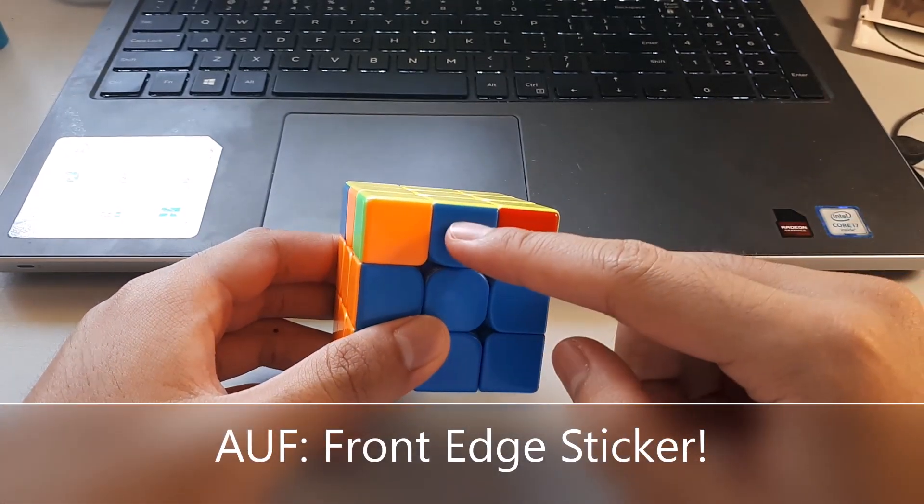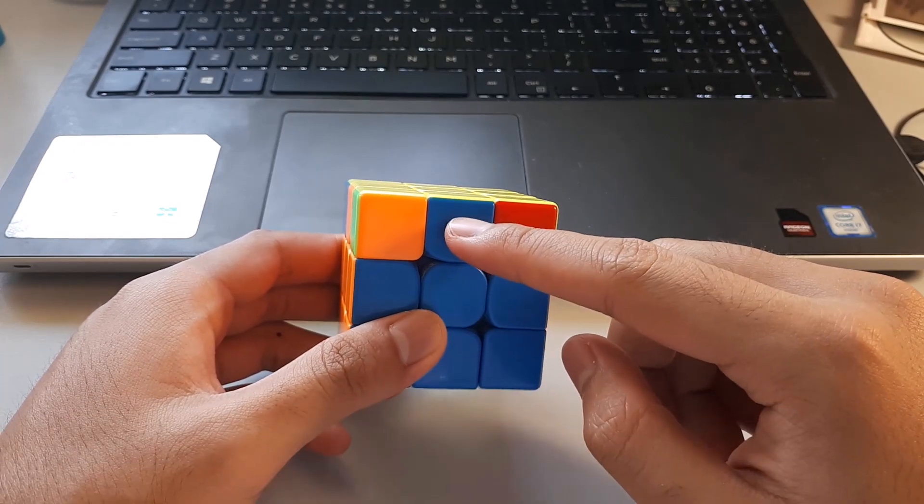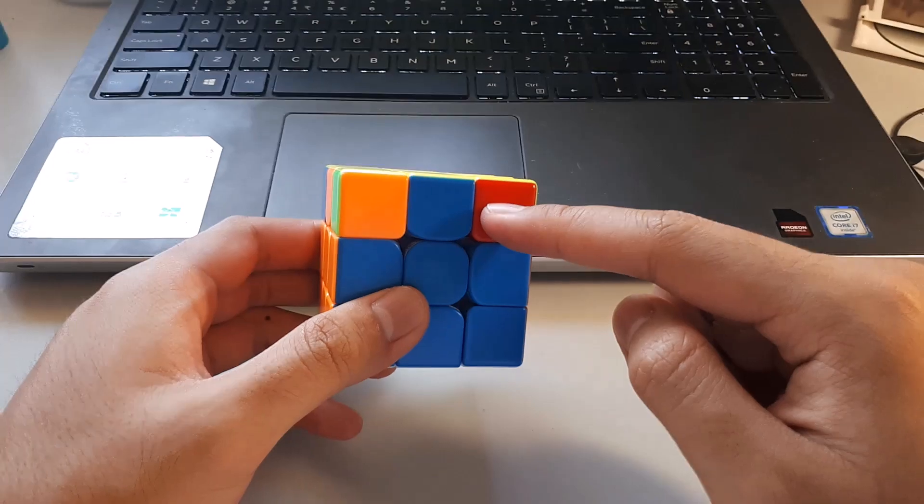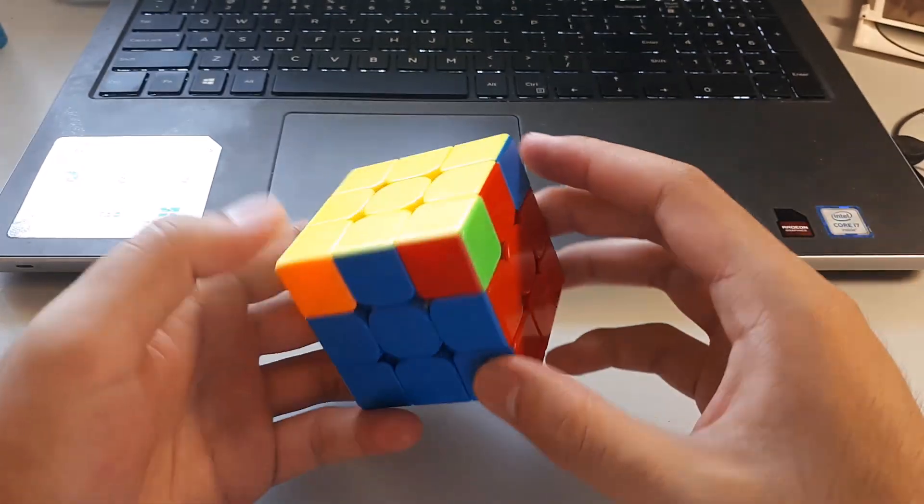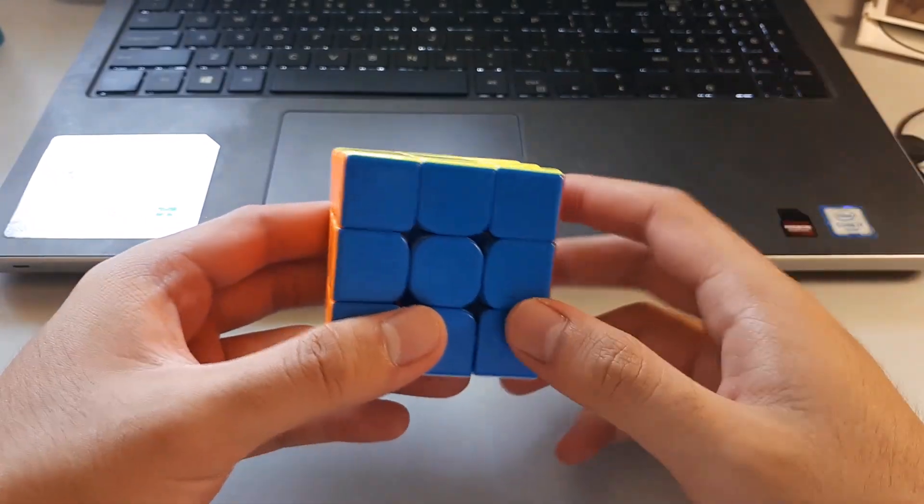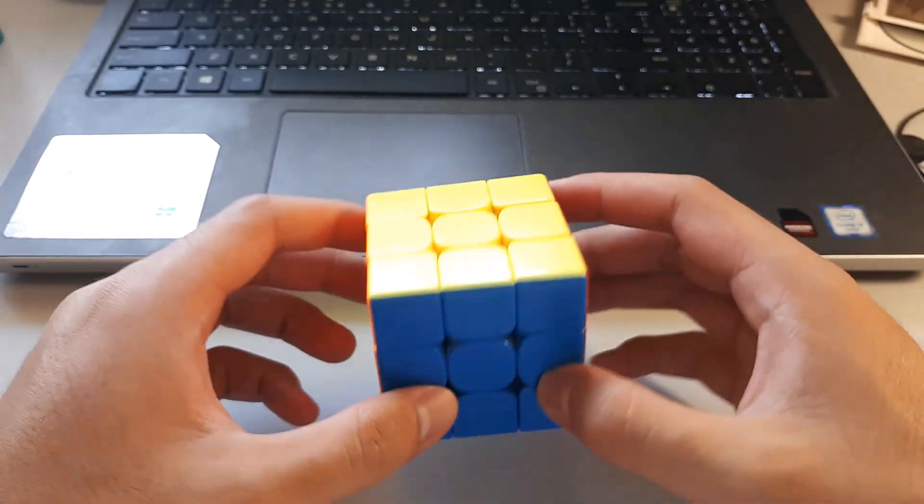So what I do is I look at this front edge sticker here. In this case, it's blue, which means that if I do the algorithm, blue is going to end up in the front. So if I do the algorithm, blue ends up at front. So if I know that, I know where to AUF if I have to.